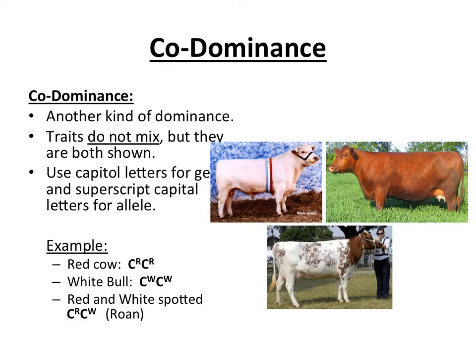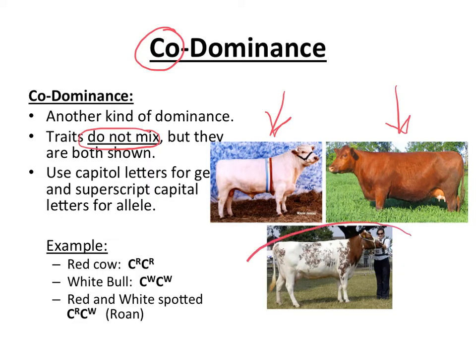Another type of gene interaction is very similar to incomplete dominance. Instead of incomplete dominance, it's called codominance. Instead of mixing, both traits are actually completely shown. So in cattle, for instance, if you have a white coat and a red coat, the offspring — instead of being a pink coat where the hairs are a different color than either parent — this offspring has hairs that are completely white and hairs that are completely red.